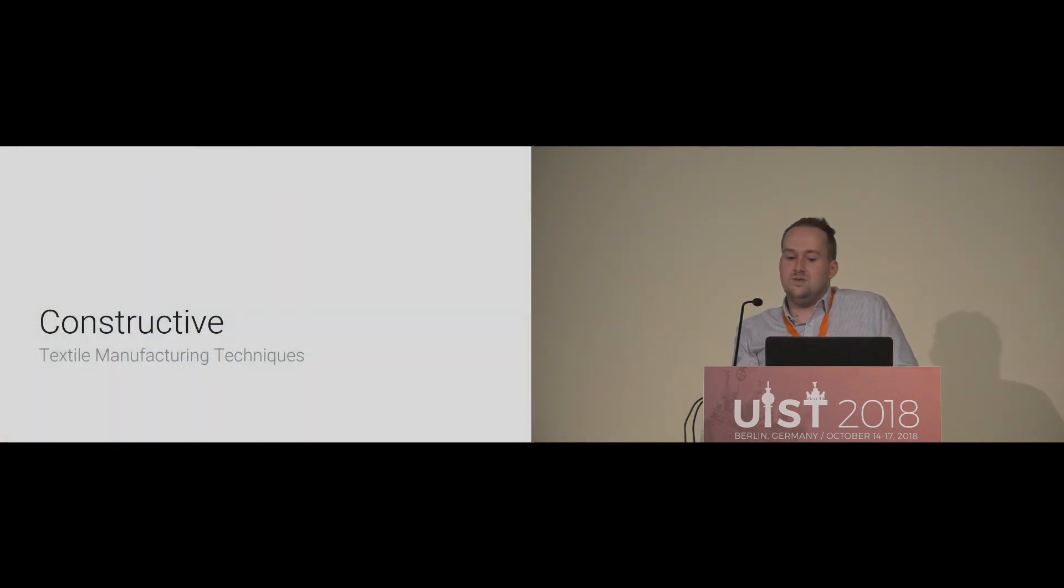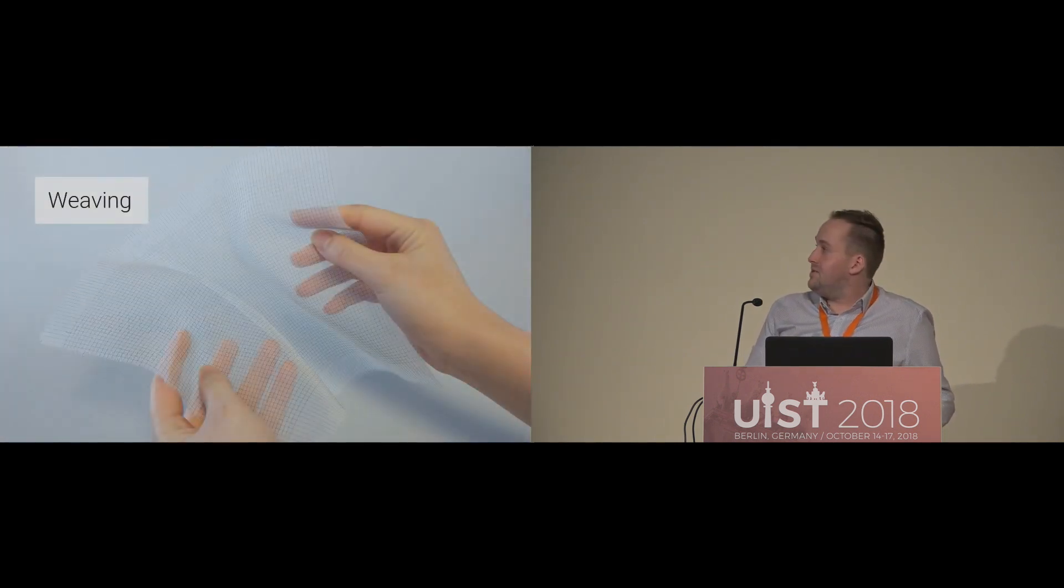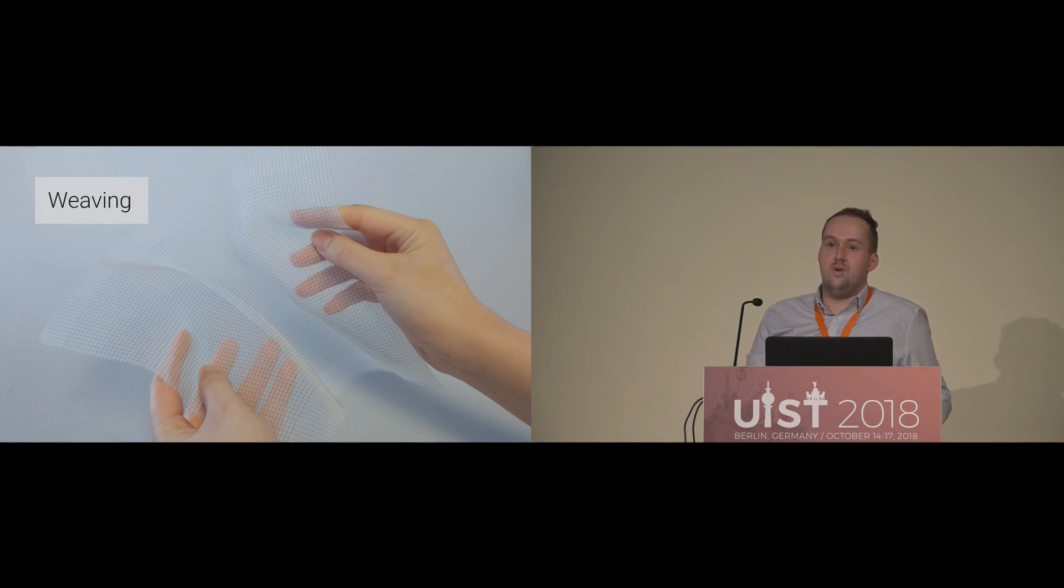We also wanted to show that these yarns can be used for constructive techniques, such as weaving. For weaving, the resistive yarns have been woven in weft and warp direction, in combination with monofilament PET fibers. As visible in this picture, you can see the resistive yarns in black and grayish color, and the PET fibers in white. Depending on the density of those functional yarns, the spatial resolution can be increased or decreased.